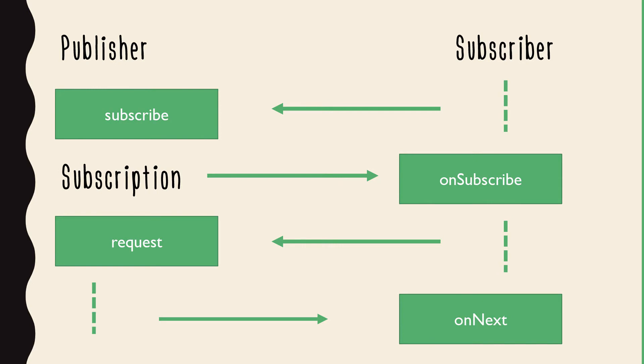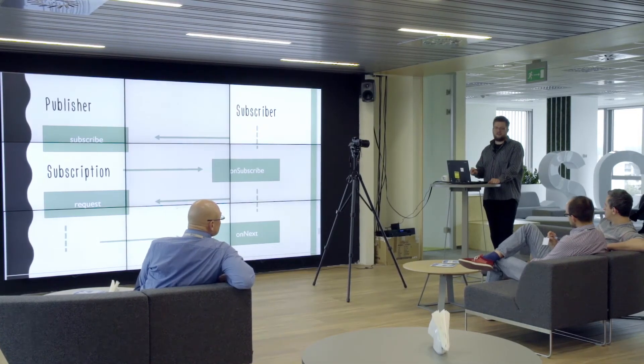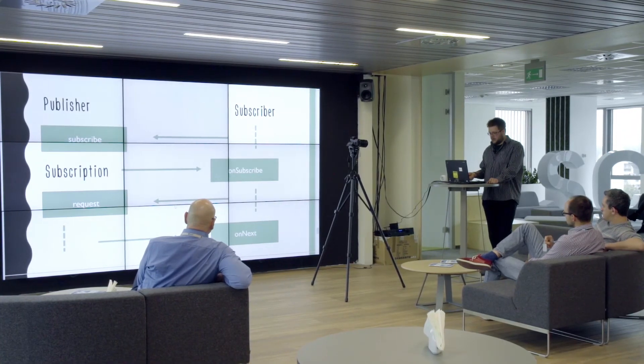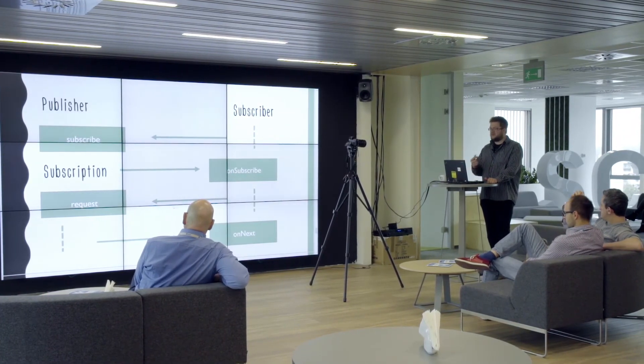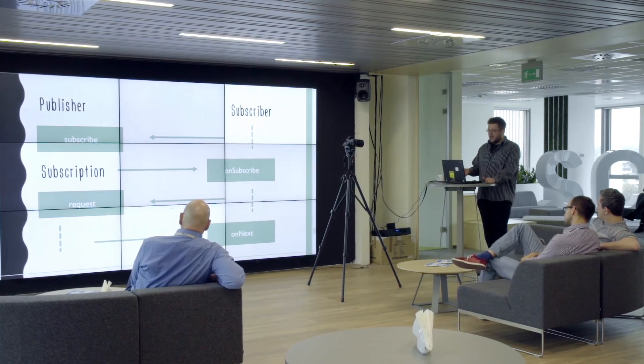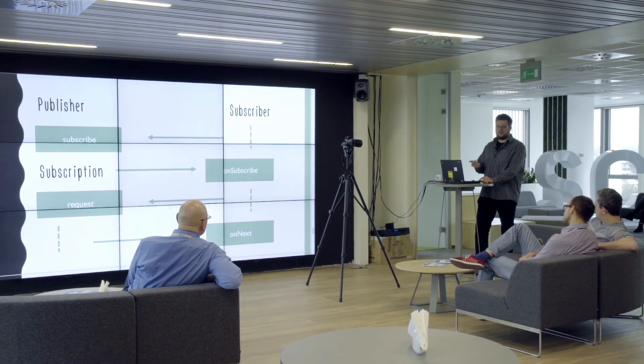The flow of the communication is that the subscriber subscribes itself to the publisher. The publisher creates a subscription object, emitting a subscription event which is listened to by the subscriber, and the subscription object is passed through it. Then, whenever the subscriber needs another pack of data, it explicitly asks the subscription via the request method. And whenever a new item is ready, it is passed through the next event, which the subscriber is listening on.